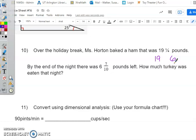And hopefully you know you would just subtract. I would say, oh well, 19 minus 6 is 13. So about 13 pounds was eaten. So that's what we're going to do here, guys. We're going to do 19 1/4 minus 6 7/10.